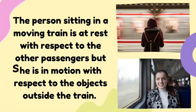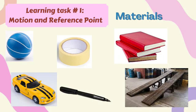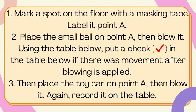Now let's try to do this activity. Materials needed are: a small ball, toy car, masking tape, marking pen, cardboard book, and any object that can be used as a ramp. For the procedure: mark a spot on the floor with a masking tape and label it point A. Then place the small ball on point A and blow it. Using the table, put a check if there was movement after blowing is applied.